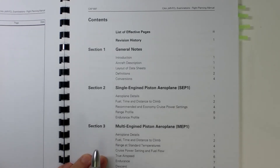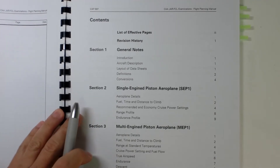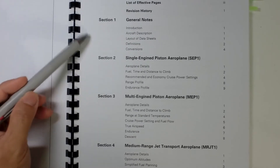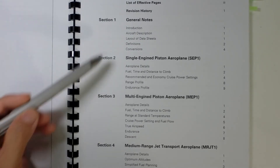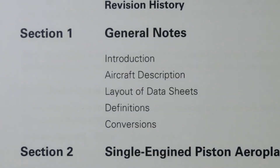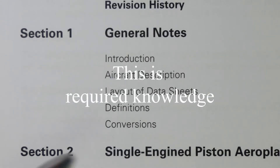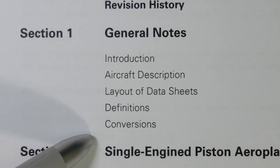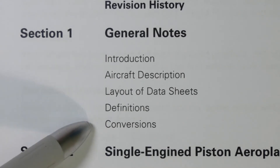This is the contents page for our CAP 697, which is for flight planning. It's broken into four sections: Section 1, 2, 3, and 4. Section 1 is the general notes section, which has the introduction to the document, aircraft descriptions, layout of data sheets, definitions, and conversions. You will be tested on definitions and conversions — you need to know these very well, as you may not have a reference during your assessment.